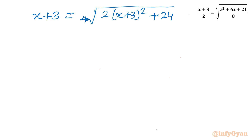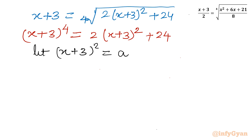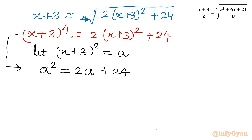Now I raise both sides to the power 4. So I get x plus 3 whole to the power 4 equals 2 times x plus 3 whole squared plus 24. Now I will use a substitution. It is clearly visible there is x plus 3 whole squared, so let me write x plus 3 whole squared equal to a. Substituting, the equation becomes a squared equals 2a plus 24, which is a quadratic.